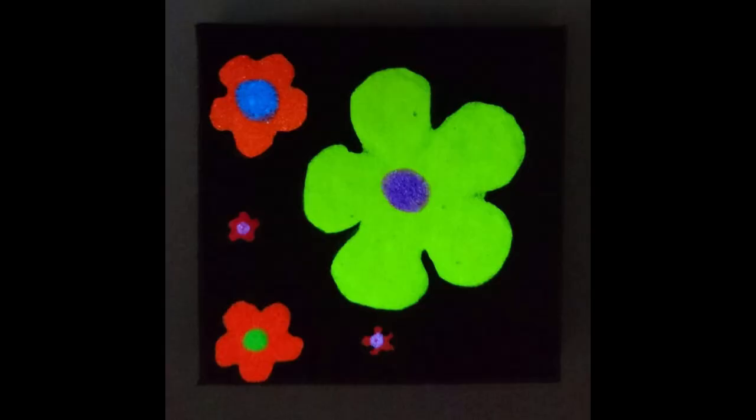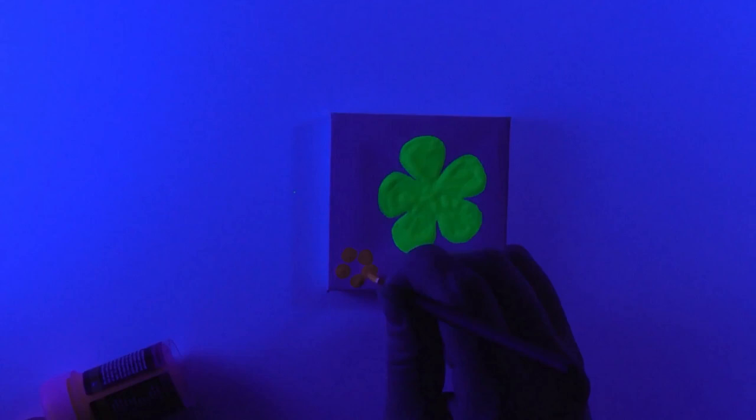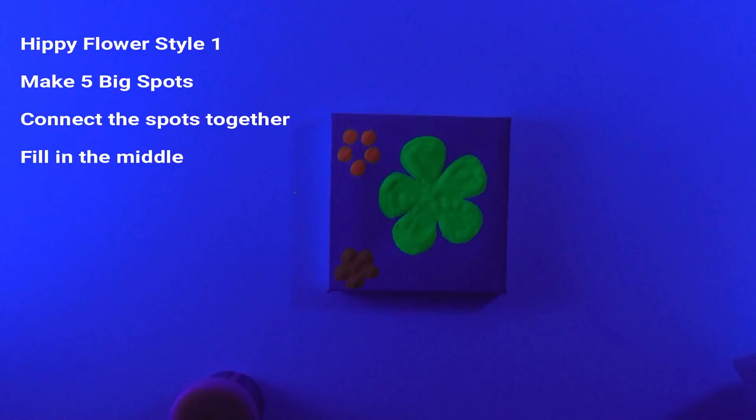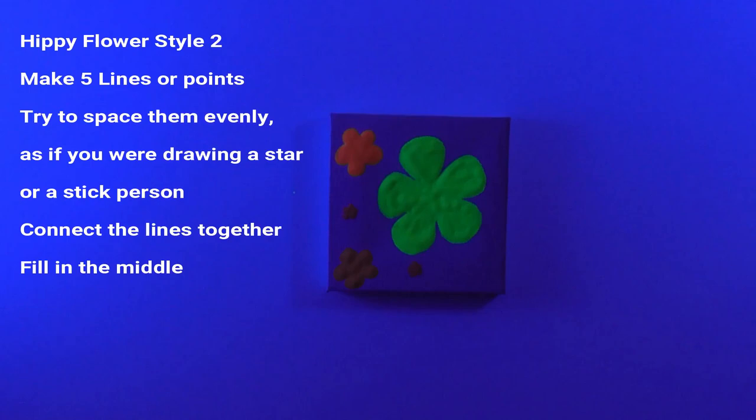The first thing you need to know about drawing little hippie flowers is that they're free and happy like hippies, so you don't need them to be perfect. What I normally do is start by drawing five points like a little person, kind of like a stick figure only with a long pointy head, and then I just fill them in. I fatten them up and make it how I want it.